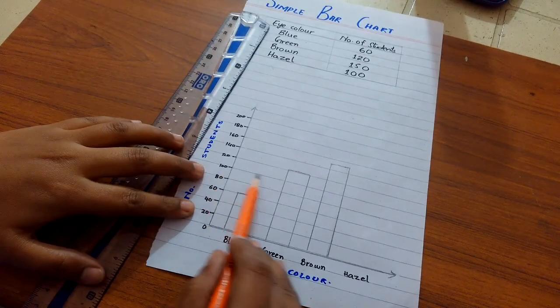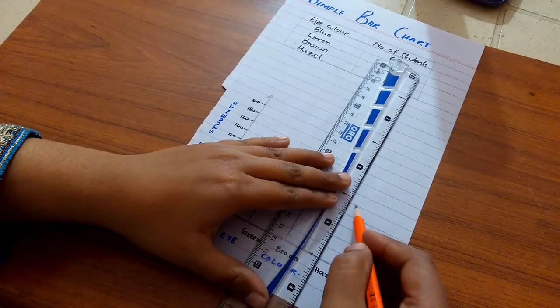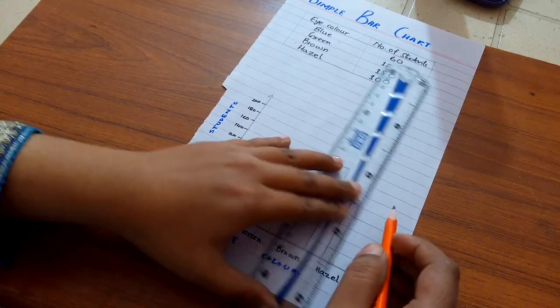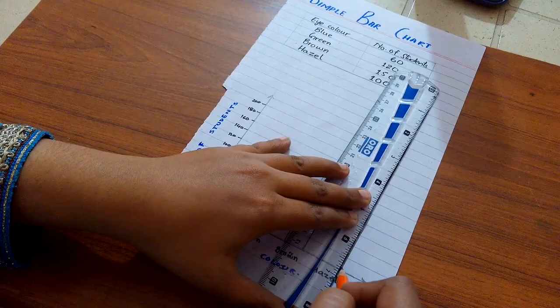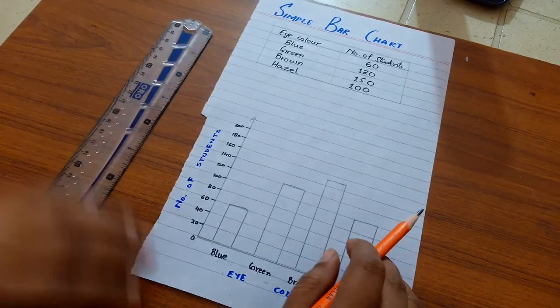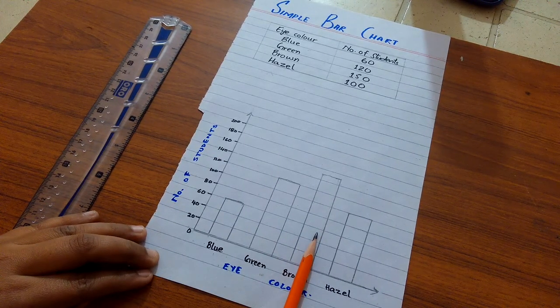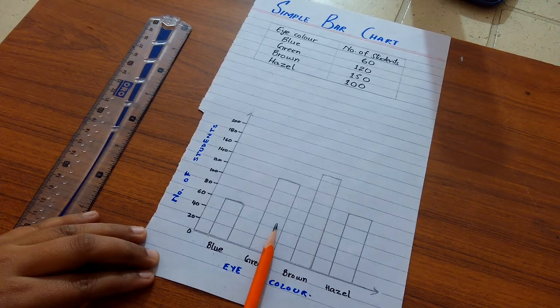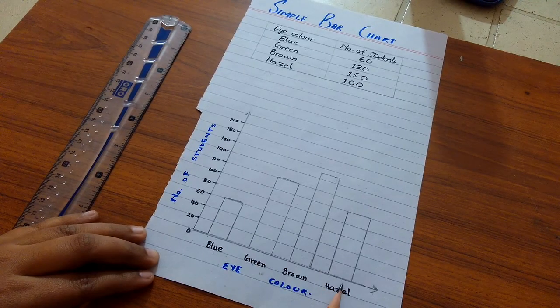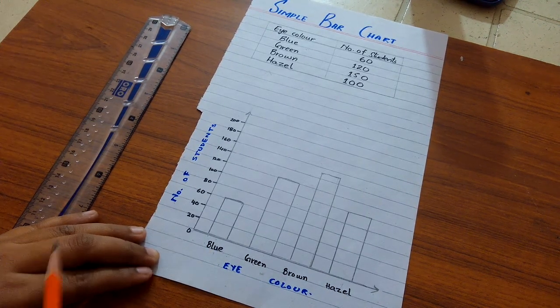Now this graph clearly shows us most of the number of students in the class have brown eyes, then green, then hazel, and the least number of students having blue eyes in the class.